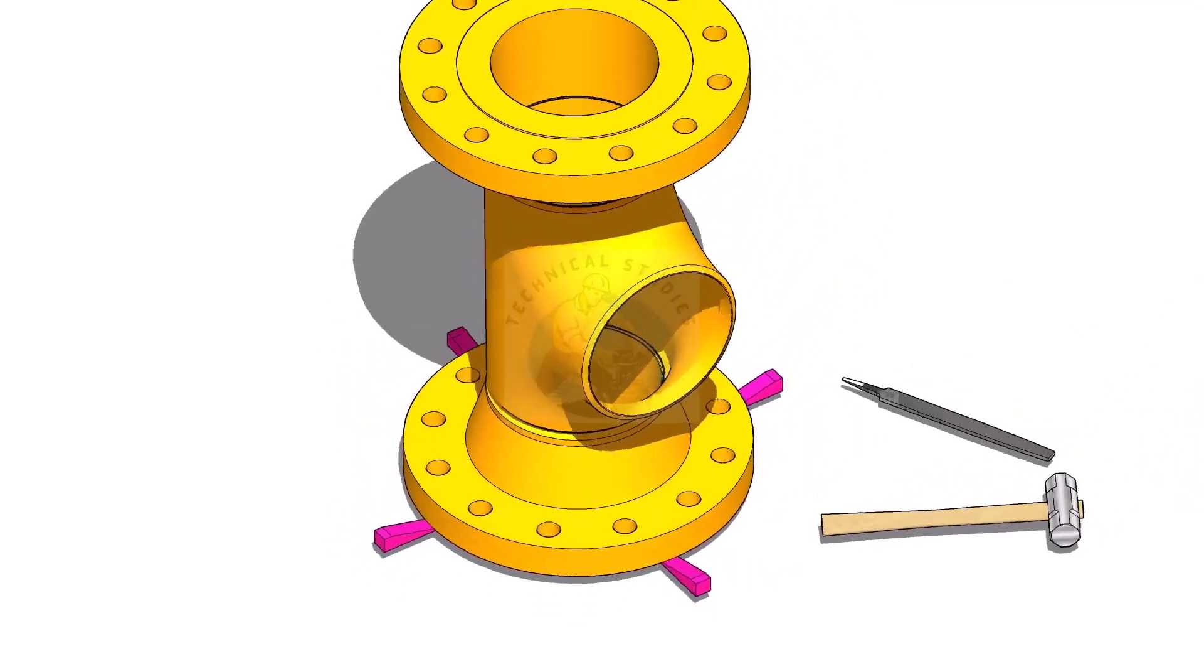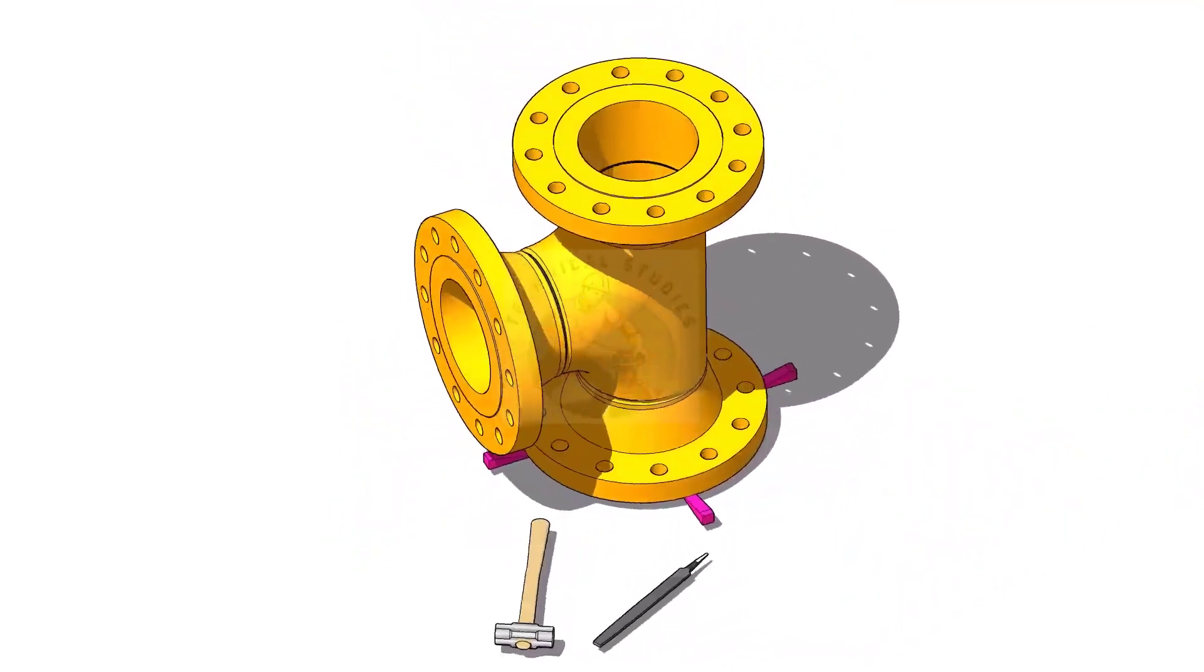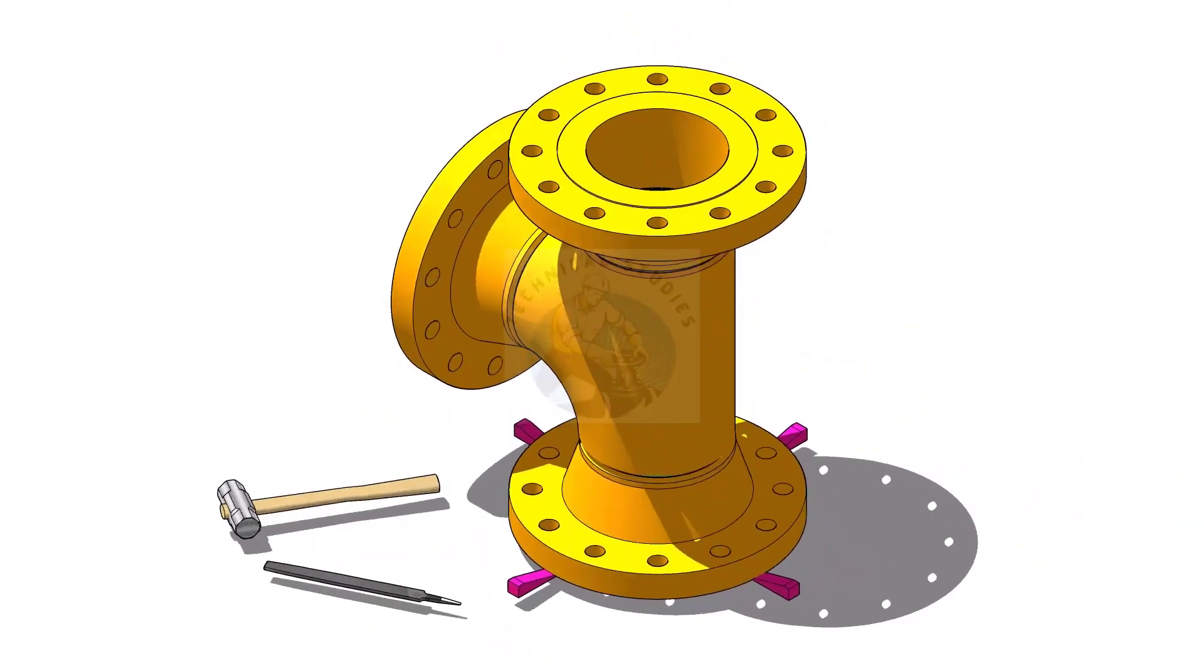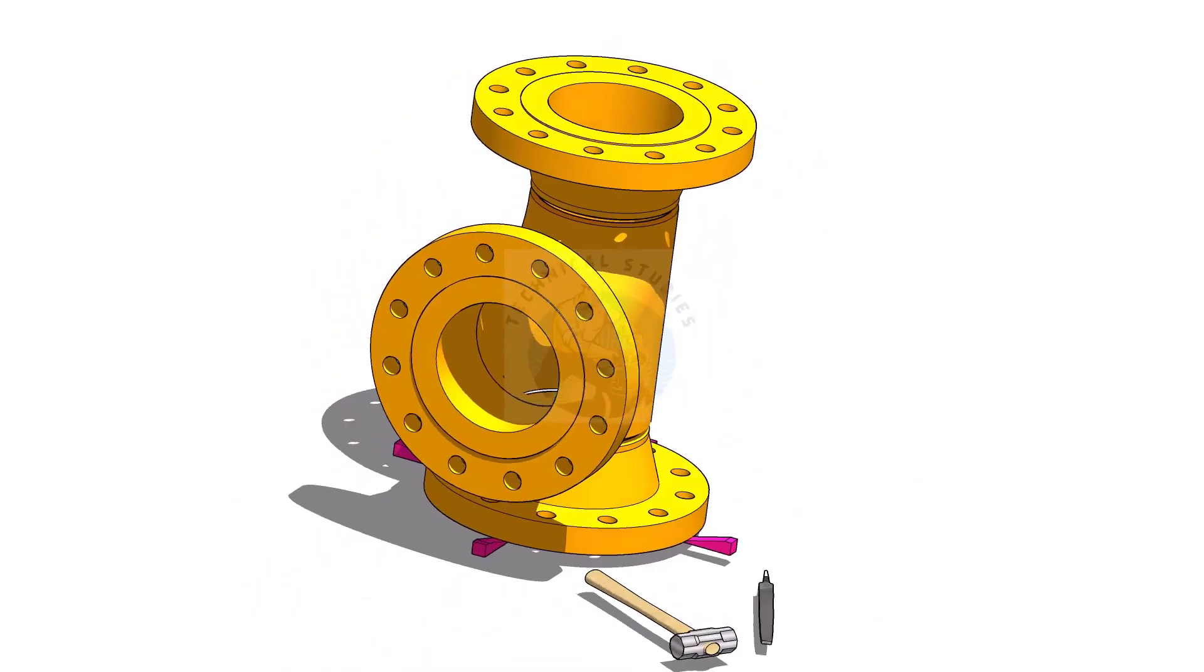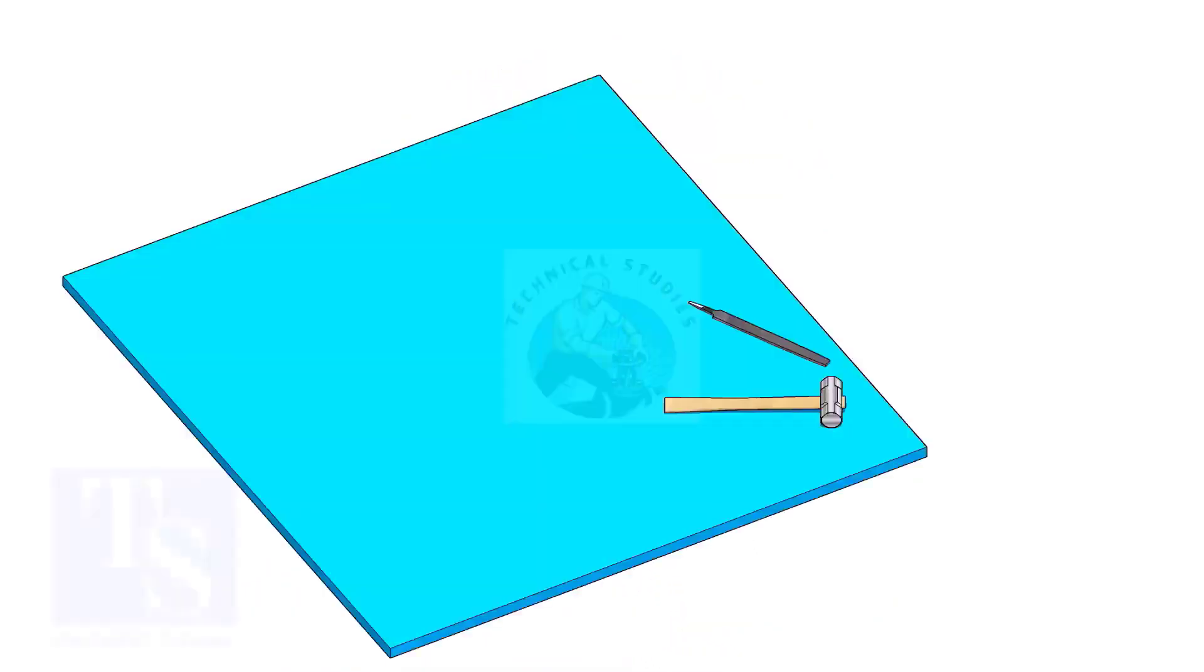Welcome to Technical Studies. In this tutorial, I will show you how to fit up flanges to a tee in a different method. The flange face may get damaged during fabrication. Use a non-metallic sheet like a Teflon sheet, thin hardboard, or piece of CNAF gasket sheet, as shown in the video.